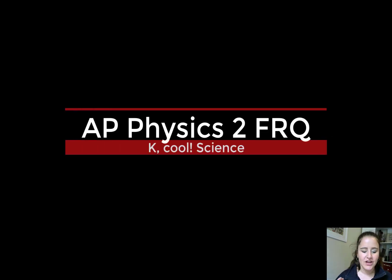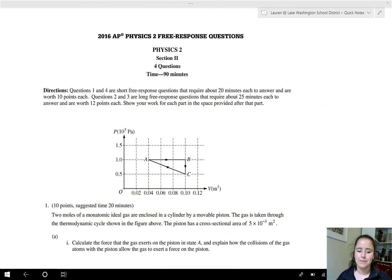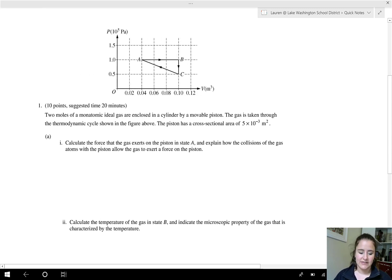Hey guys, Ms. Peterson here. So today what we got going on is a thermodynamics free response problem. This one is from the 2016 AP exam. Right here we have a PV diagram of a cycle. 2 moles, that's going to be important, N equals 2 moles of a monatomic ideal gas.